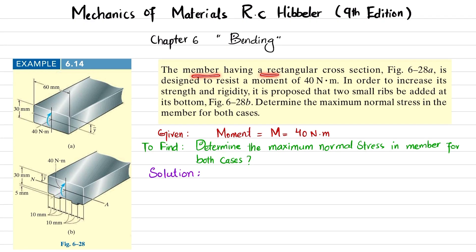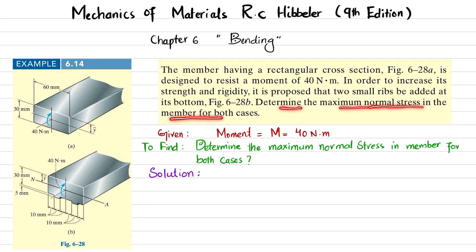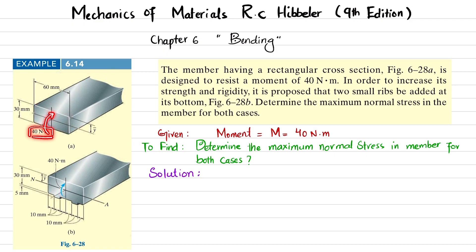The problem statement is: the member having a rectangular cross-section in figure 6-28 is designed to resist a moment of 40 N·m. In order to increase its strength and rigidity, it is proposed that two small ribs be added at its bottom. Determine the maximum normal stress in the member for both cases — case A (without ribs) and case B (with ribs).